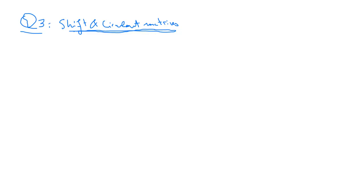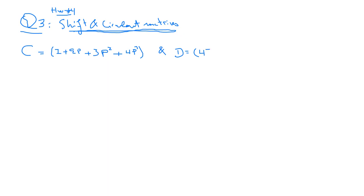This is the solution for question 3 on homework number 4. I already posted videos for solutions of question 1. We are given C which is equal to I plus 2P plus 3P squared plus 4P cubed, and D which is equal to 4I plus 3P plus 2P squared. These are two shift-length matrices based on the shift matrix P.